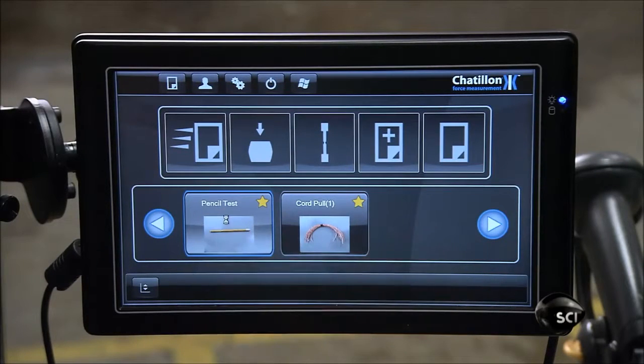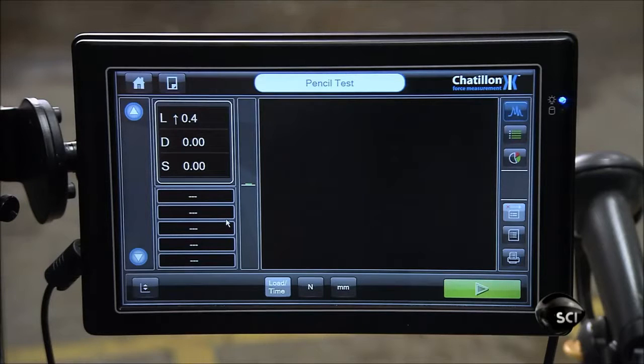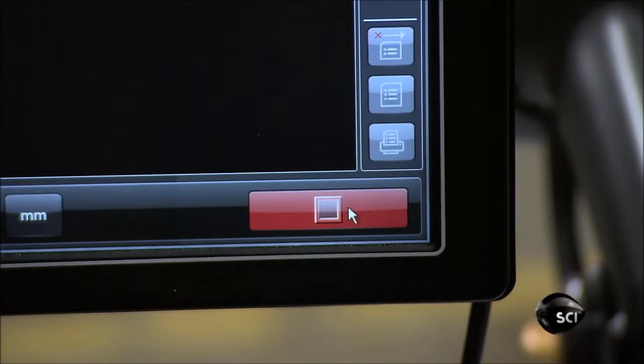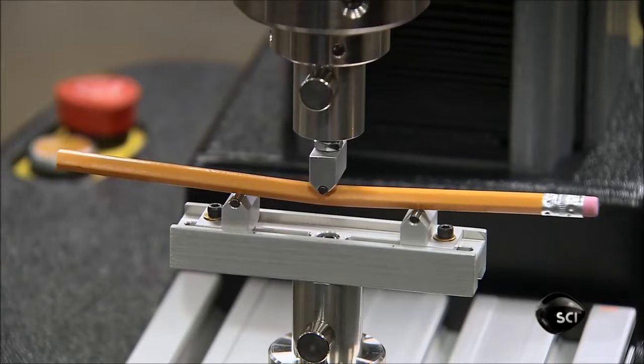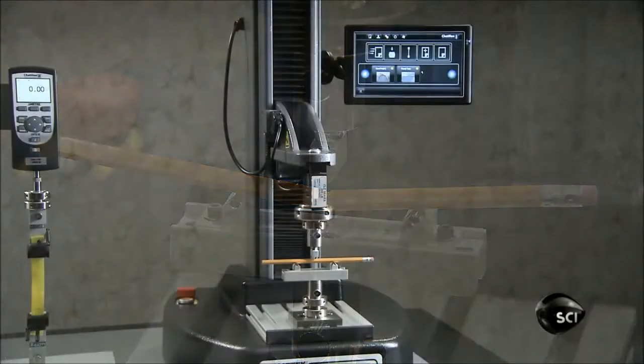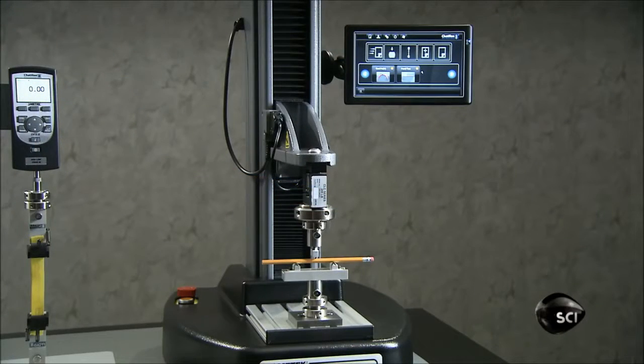Force testers are built to pull and compress things. Here, the tester arm bears down on a pencil. It determines how much force can be applied before the pencil bends or breaks, and it displays the measurements on a screen.